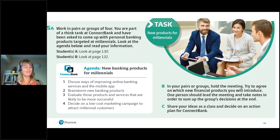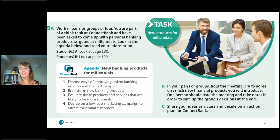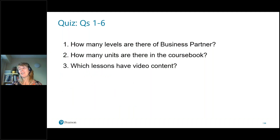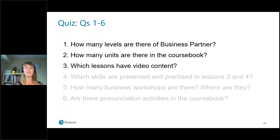The majority chose the correct answer: lessons one and the communication skills lesson. A few optimistic people wanted video to appear in all lessons! So: we don't have videos for all the lessons, but remember you have the one authentic video in lesson one and up to four videos from the communication skills lesson. So to recap: there are eight levels in Business Partner, eight units in the course book, and video appears in lessons one and three.